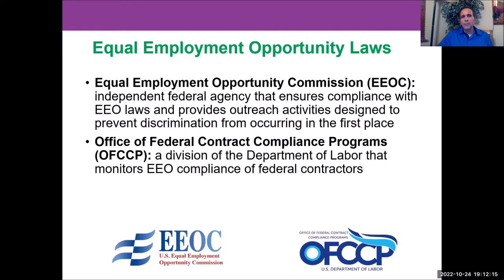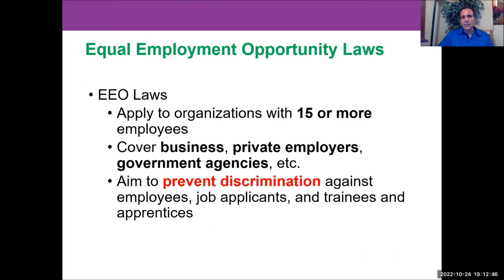The Equal Employment Opportunity Commission is an independent federal agency which ensures compliance with EEO laws and provides outreach activities designed to prevent discrimination from occurring in the first place. The Office of Federal Contract Compliance Programs is a division of the Department of Labor which monitors equal employment opportunity compliance of federal contractors. These EEO laws apply to companies that have 15 or more employees, covering businesses, private employers, government agencies, and many others. The main aim is to prevent discrimination against employees, job applicants, trainees, and apprentices in the workplace.